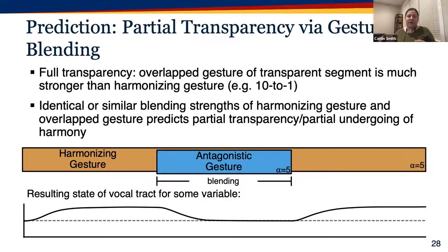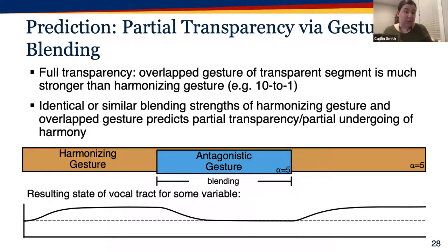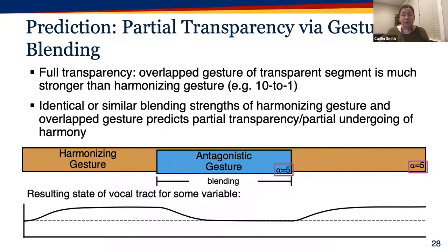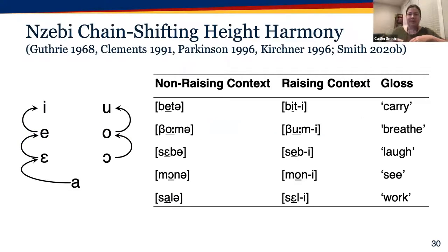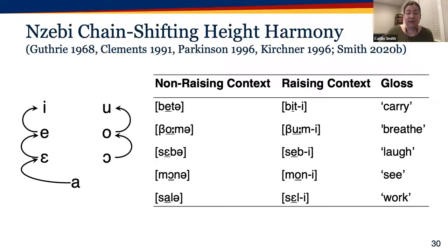This outcome depends on the transparent lip-spreading gesture's strength being much greater than the harmonizing lip-protrusion gesture — for example, a 10-to-1 strength ratio. Another scenario is one in which a harmonizing gesture and an overlapped antagonistic gesture have similar or identical strengths. When this occurs, the prediction is blending resulting in partial transparency and partial undergoing of harmony. That's exactly what we need for our analysis of chain-shifting partial height harmony of Nzebi.